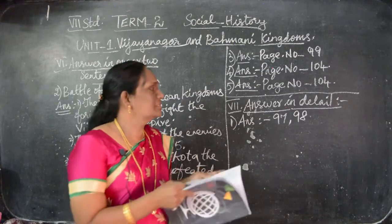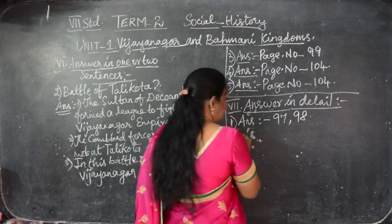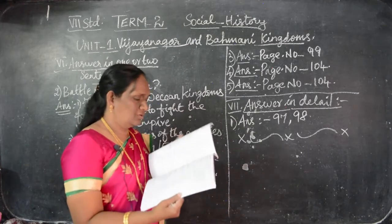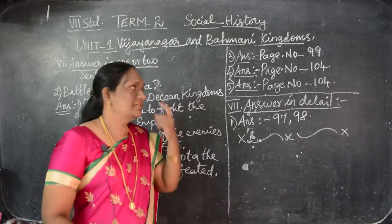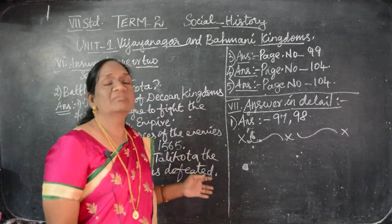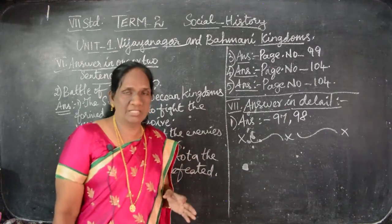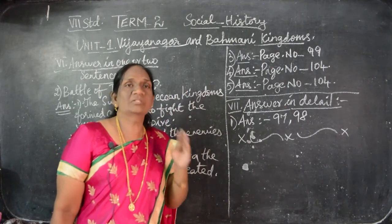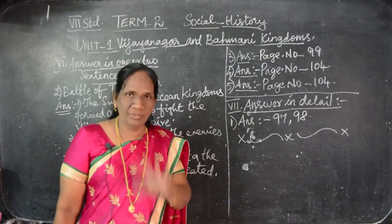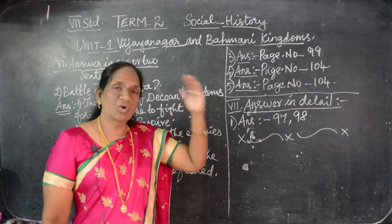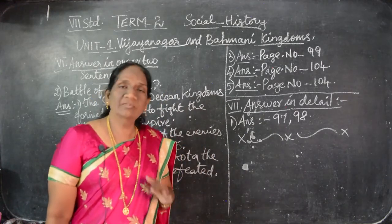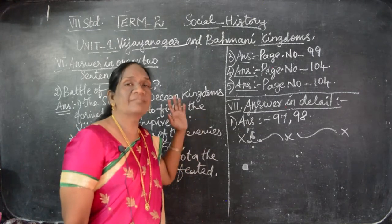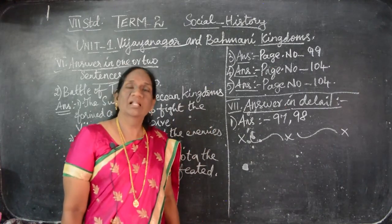So, have you all understood, children? Till this the answers are over — till Roman numeral 7, answer in detail. So this lesson will also come for your half-yearly examination. Learn well. First you have to write all the answers in the book — choose, fill up, match, everything — you have to write in your book first. Then afterwards you copy it down in your classwork notebook. Then only it will be easy for you to learn. This is Term 2 History, first lesson. It will come for the half-yearly examination. Learn well, children.